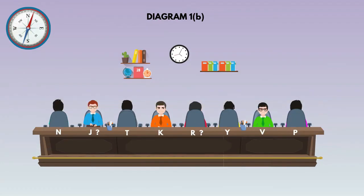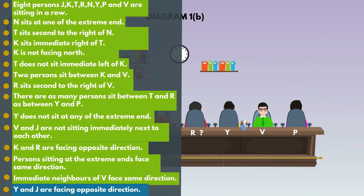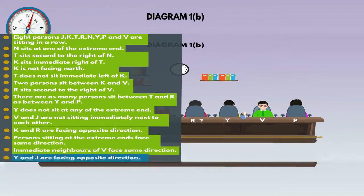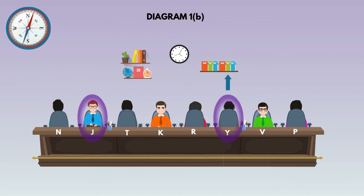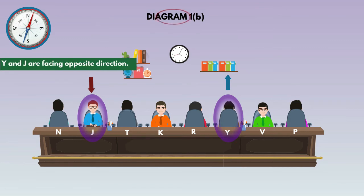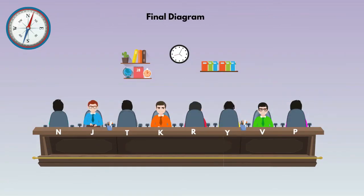Go to the next statement: Y and J are facing opposite direction. In diagram 1B, Y faces north direction, so J must face south direction because Y and J are facing opposite direction. This is the final diagram.